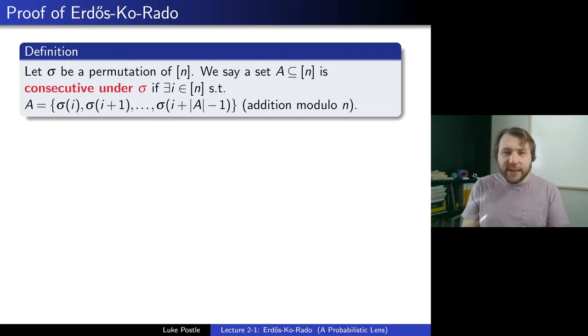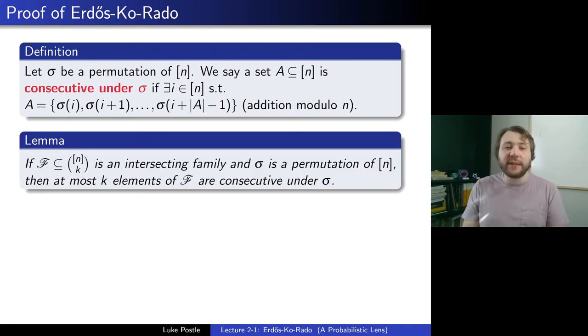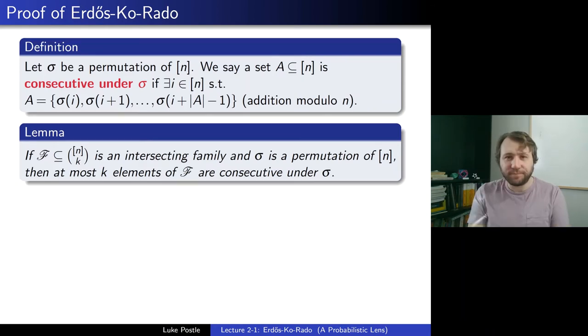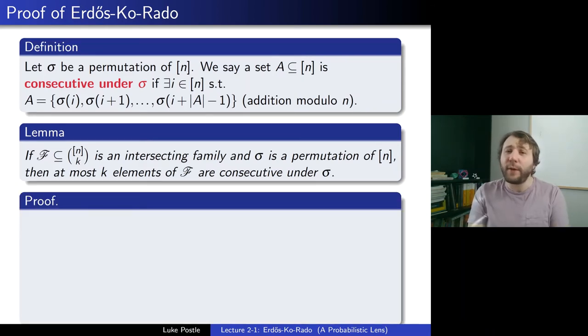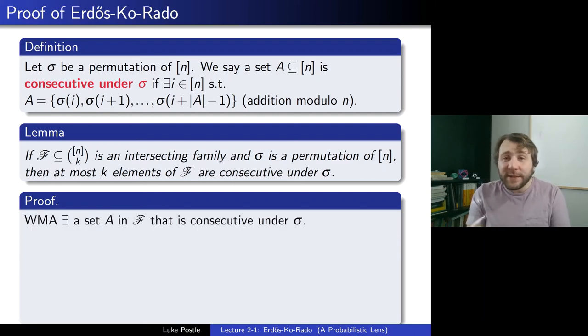So what good is that concept? It's quite natural. Actually, we can say something meaningful about intersecting families about their consecutive sets. So namely, we have the following lemma. If F subset of n choose k, so that's again the sets, is an intersecting family, and sigma is a permutation of n, then at most k elements of F are consecutive under sigma. So if we only look at the consecutive sets, the claim is that at most k of them are in this F. Let's go through this proof. You may want to pause and try to prove this yourself before I continue. But here is the proof. You may assume there exists a set A in F that is consecutive under sigma. Otherwise, there is nothing to show. None of them should be fine.